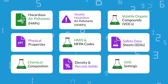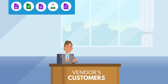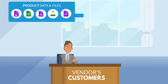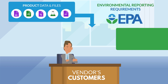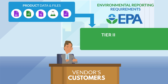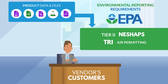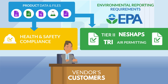This information is essential for a vendor's customers to carry out environmental reporting requirements, such as Tier 2, TRI, NESHAPs, air permitting, and more, along with maintaining health and safety compliance.